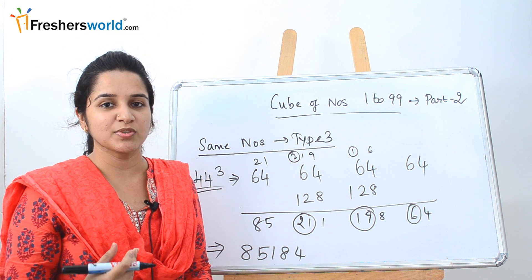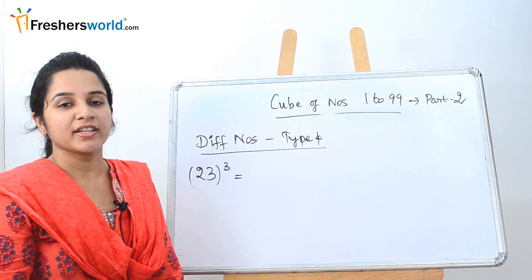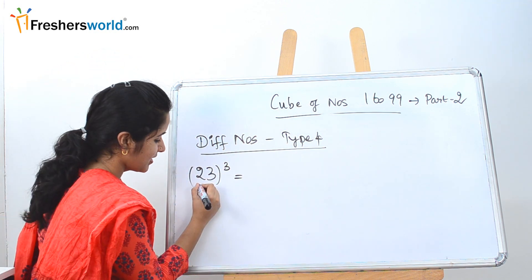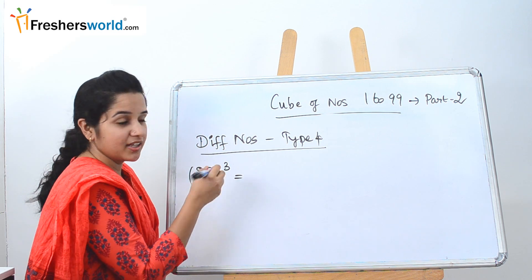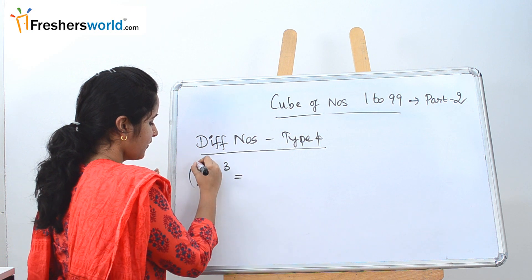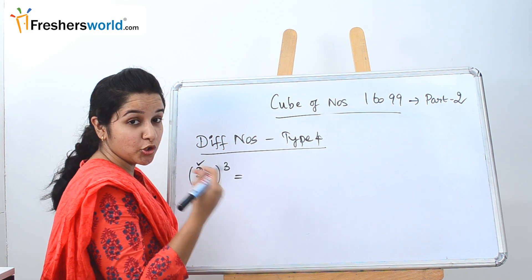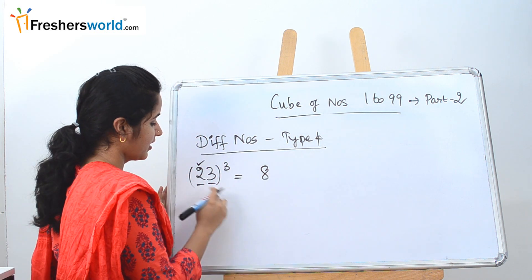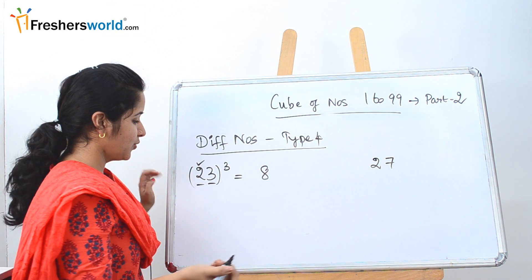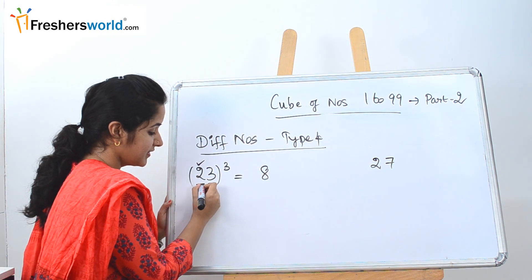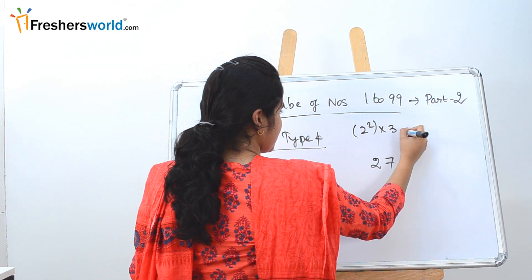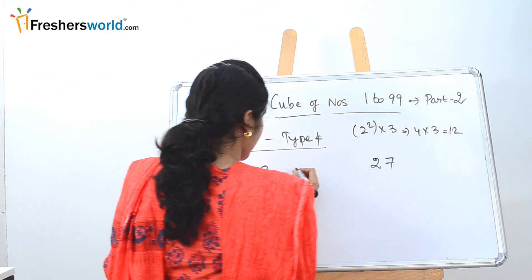Now let's look at Type 4: different numbers. The question given is 23 cube. As you can see, the units and tens places are different, which is why it falls under Type 4. First, take the first digit: 2 cube is 8 — write it in the left-hand corner. Then 3 cube is 27 — write it in the right-hand corner. Next, square the first number and multiply by the second: 2 squared into 3 is 4 times 3, which is 12. Write it here.